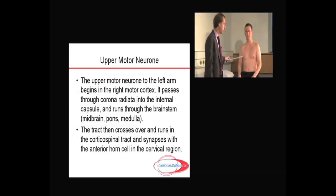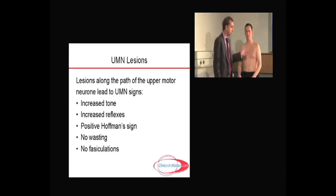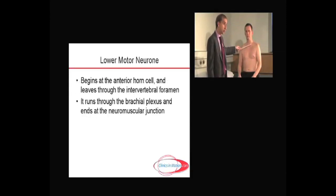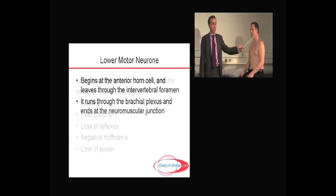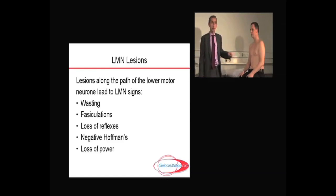Lesions along that pathway cause changes in keeping with an upper motor neuron lesion: increased tone, increased reflexes, a positive Hoffman sign, but no wasting or fasciculations. Similarly, the lower motor neuron starts from the anterior horn cell, comes out through the intervertebral foramen, goes through the brachial plexus, and runs down the arm to the neuromuscular junction. Lesions along that pathway cause lower motor neuron signs: wasting, fasciculations, loss of reflexes, negative Hoffman's, and loss of power.